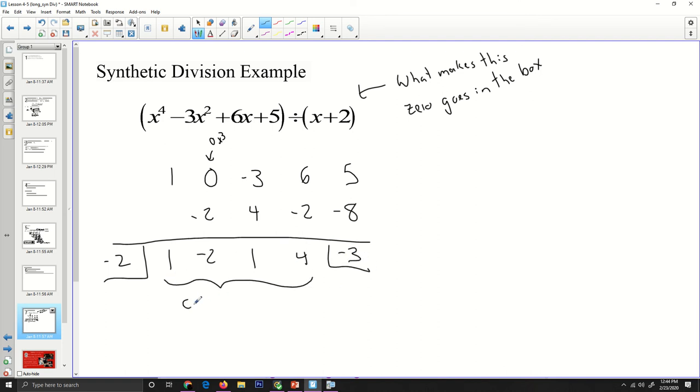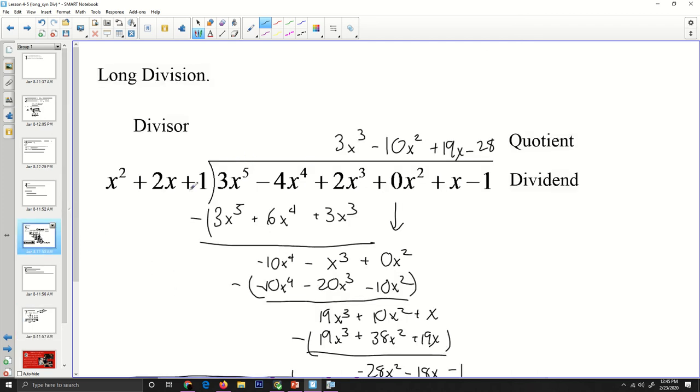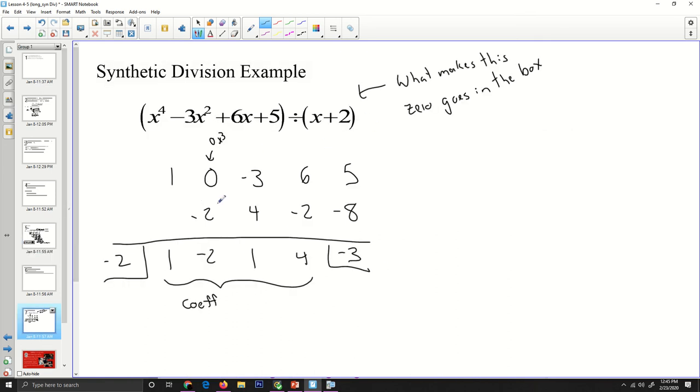These here are the coefficients. Since I took x to the 4th and divided by x to the 1st, just like in this last one, you'll notice I started with x to the 5th and I divided by x squared. The result was x to the 3rd. 5 minus 2 is 3. In this particular one, I'm going x to the 4th minus x to the 1st. For my final answer: 1x to the 3rd minus 2x squared plus x plus 4 plus negative 3 over x plus 2. Or, what we could do is make it 4 minus that fraction right there.